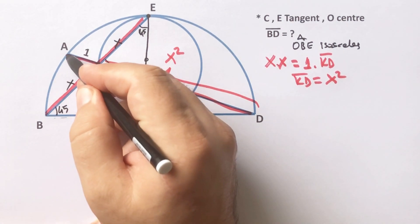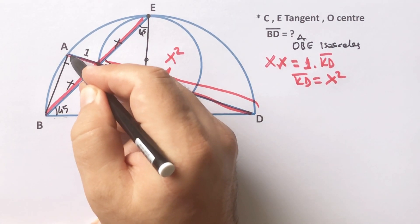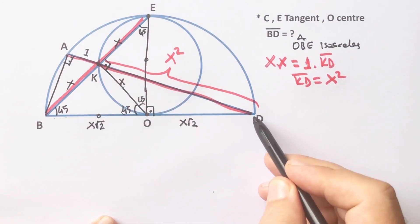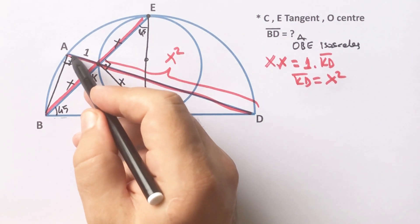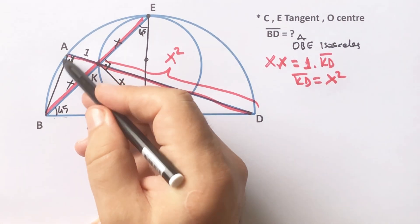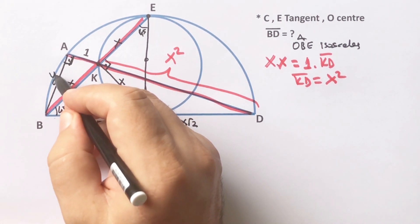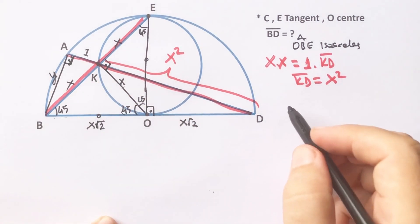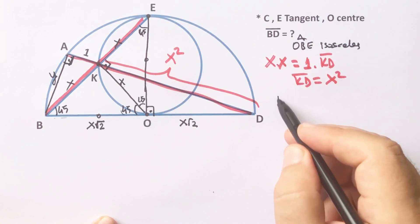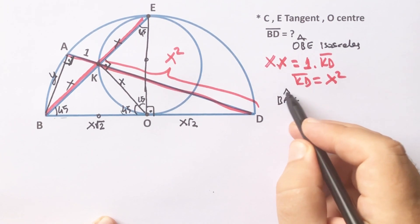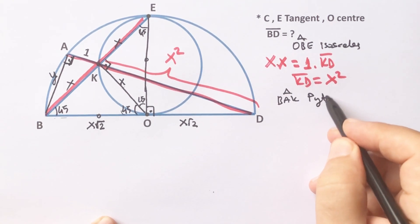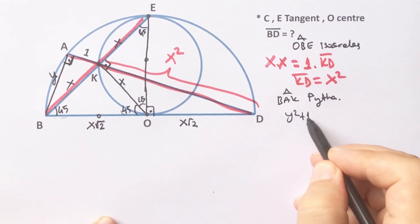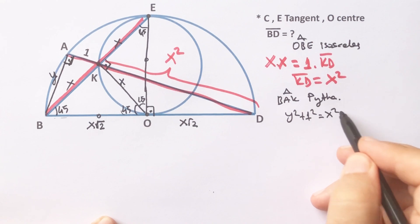Let's connect B and E like this. This angle must be 90 degrees because it is opposite the diameter. Let's call this length y. For this triangle, if we apply the Pythagorean theorem: y² + 1² = x².